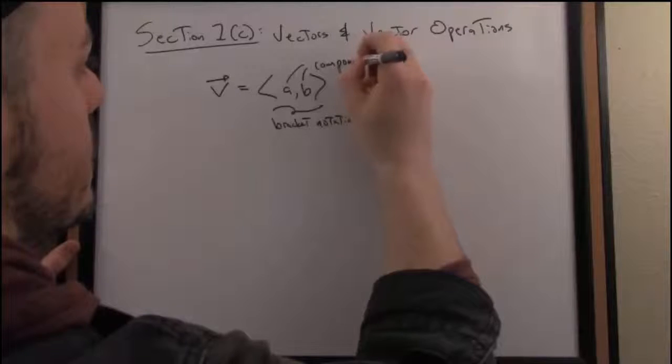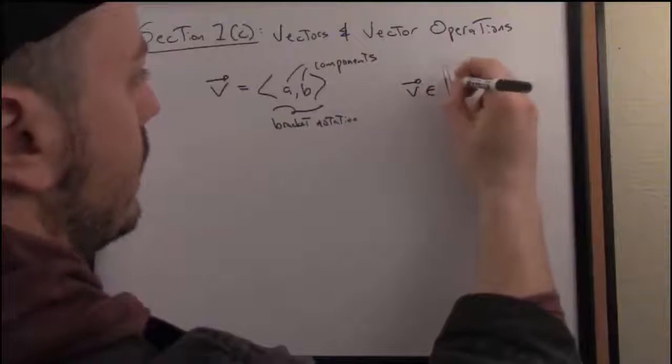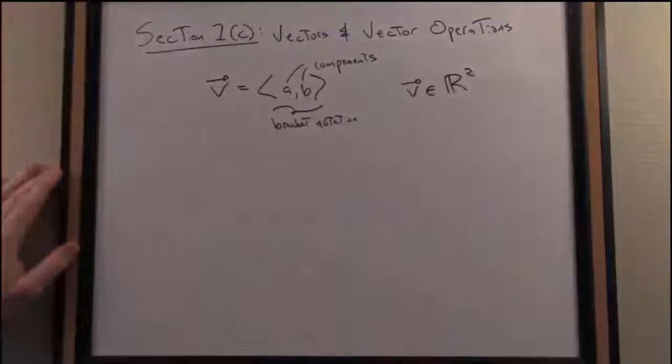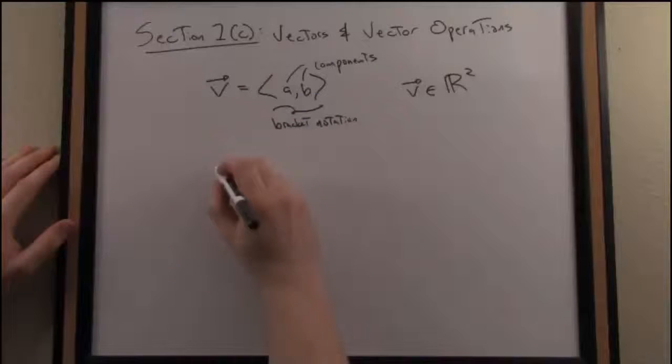So because this is a two-dimensional vector, we can use our previous notation and write that that vector is an element of R², meaning those components are real numbers for instance. These are just placeholders with a and b.